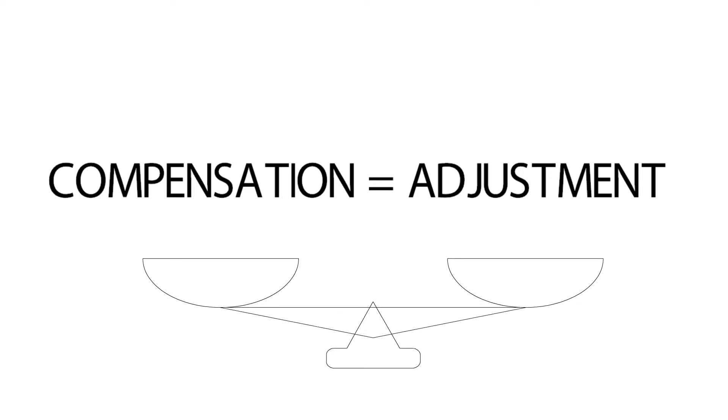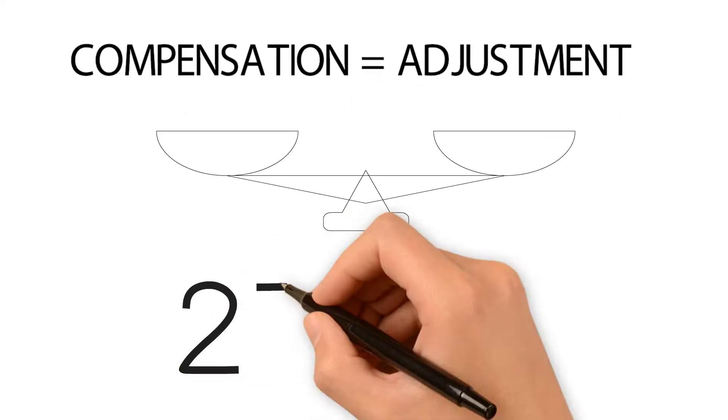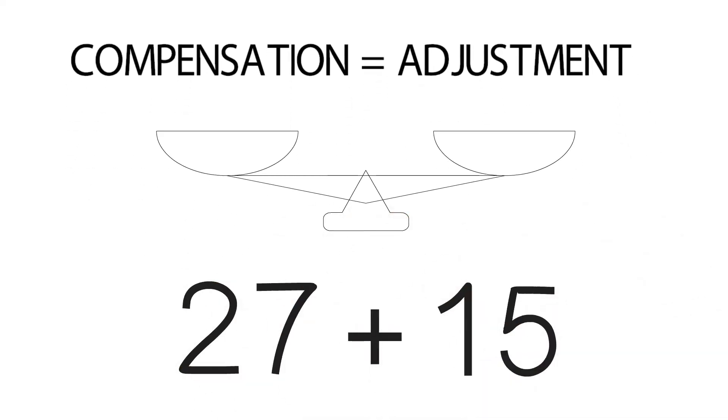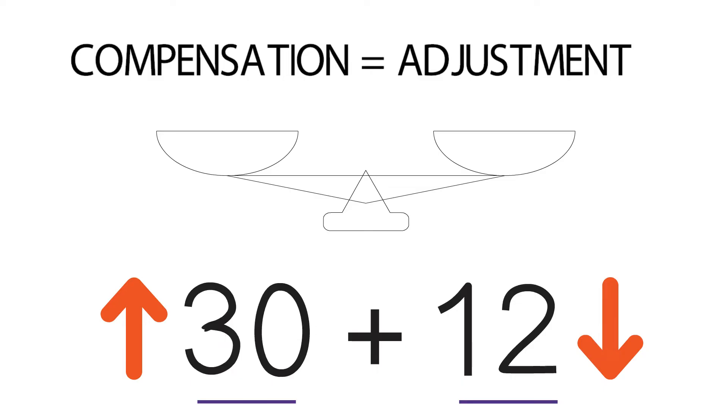We use this in math to make a problem easier to solve. Compensation involves one number becoming smaller and the other number becoming bigger. For example, with 27 plus 15, the 15 goes down while 27 goes up to make a friendly number like 30. This doesn't change the overall sum but makes it easier.